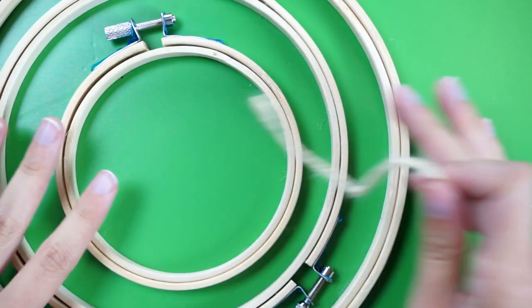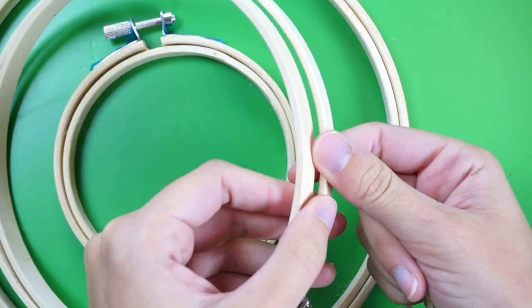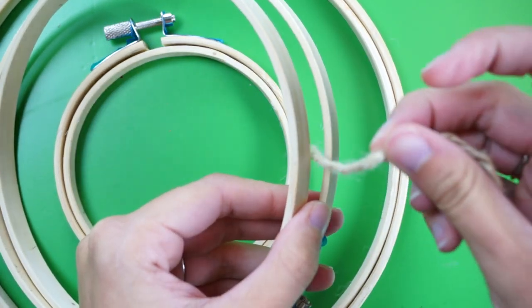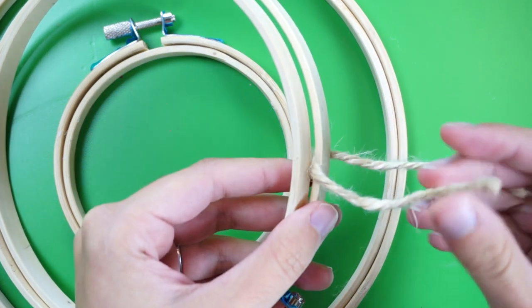Then switch to the opposite side of the middle hoop and do the same thing with another piece of twine at the three o'clock spot. This can be a little bit tricky but just take your time. Until you tighten the hoops later, you can adjust the twine by gently pulling on it to get it in just the right spot.